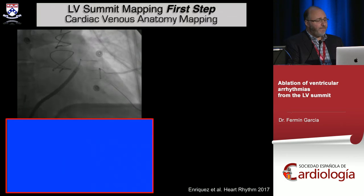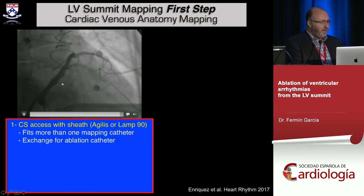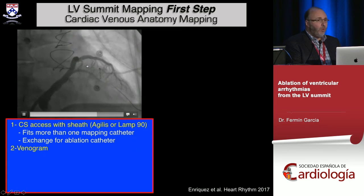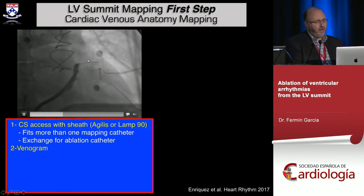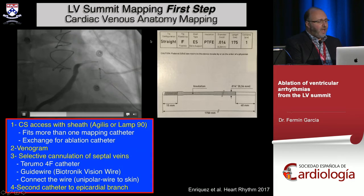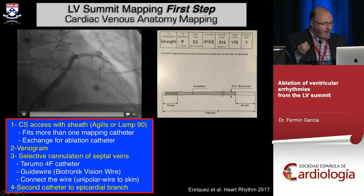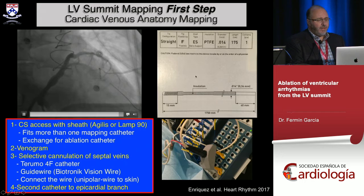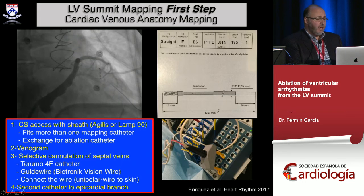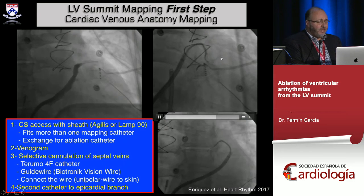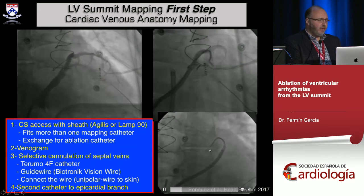Our first step for LV ostium and LV summit cases is to understand the venous anatomy. We do a very careful venogram — we get access with an agilis sheath and perform a thorough venogram. Not only have we become interested in the anatomy, but it's easier to push catheters here for mapping when you have control of the circulation. We also like to map intramurally and epicardially using what's called the Vision Wire, made by Biotronik, which can be connected to the recording or mapping system.